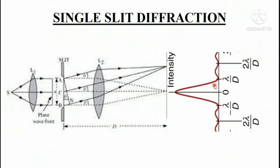Depending on the path difference, the light waves may interfere constructively forming maxima or destructively forming a minima. We get this type of pattern, and the width of this pattern depends on the distance between the screen and the slit, which will also decide the width of the central maxima.